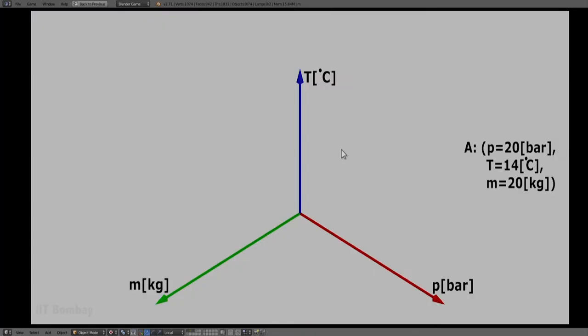So, here we have the same system, gas in a cylinder, the same state shown nicely in the three-dimensional state space where the three coordinates are pressure, temperature and mass.